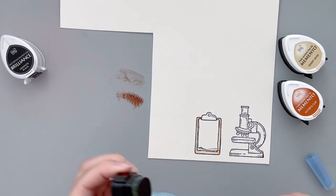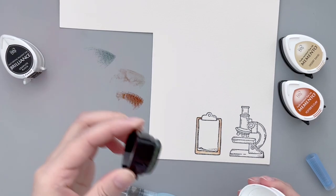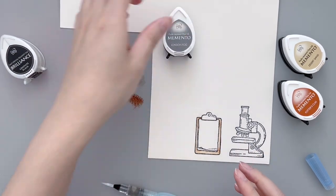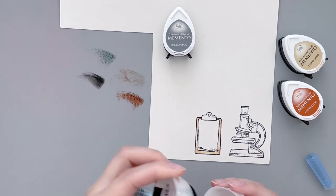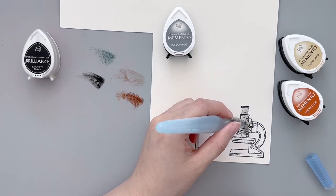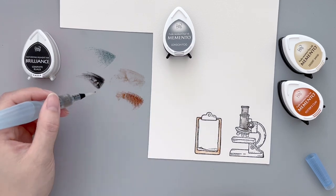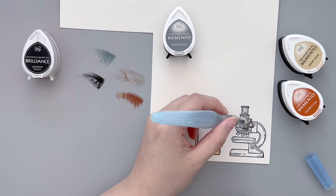I did some simple watercoloring using memento ink pads. They are dye inks so they're really great alternatives to do watercolors. I simply stamped some ink onto my craft mat and used a water brush to pick up the colors.